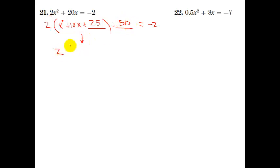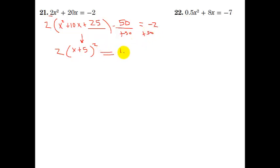So we have 2 times — this is a perfect square of (x + 5) squared, since half the middle number is 5. Now let's add 50 to both sides: negative 2 plus 50 is 48. Now I need to solve for x by working backwards, so I divide both sides by 2. 48 over 2 is 24.